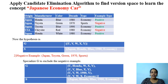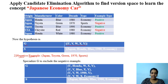Now we got a negative instance. Let's check whether G and S reject this negative instance. This G — using variable names U, V, W, X, Y for each attribute — accepts this negative example. So we have to make appropriate specialization so that G rejects this negative example.